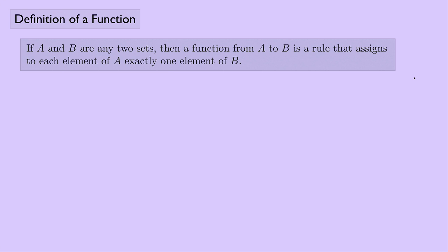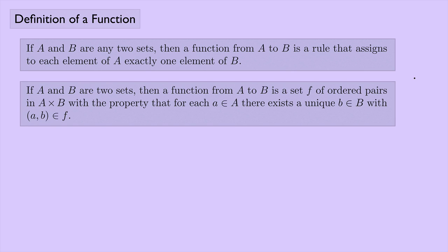Let's look at another definition and see how that one compares. If A and B are two sets, then a function from A to B is a set F of ordered pairs in the Cartesian product of A and B, with the property that for each element a in the set A, there exists a unique element b in the set B with the ordered pair (a, b) being an element of F. So this is very different — this says that a function is a set of ordered pairs. Both are very common definitions of functions.